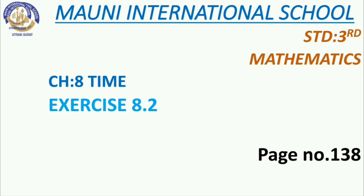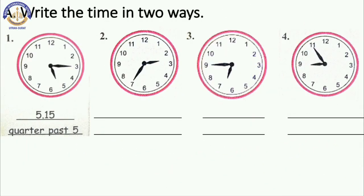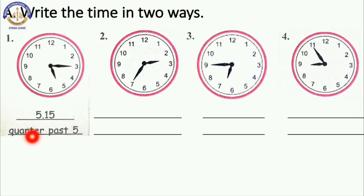Okay children, I hope you all are ready with your textbook and pencil. So first, read the question: Write the time in two ways. Two ways means one is in digits and the second one is in words. The first way is in digits and the second way is in words.